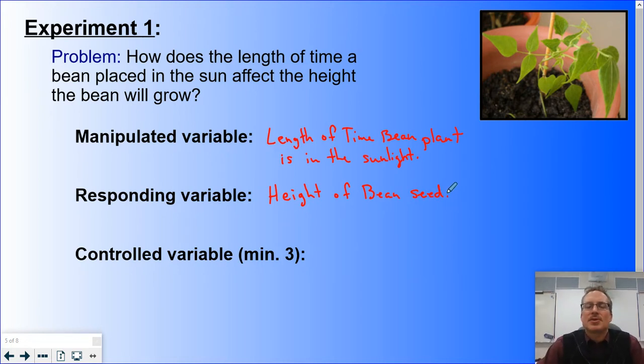How high the bean seed grows. We don't have to use height. We could have done how many leaves the bean seed plant has on it, how wide are the bean seed leaves, how many beans are produced. But we chose height to measure for our bean seed. What are some controlled variables? Let's think our way through this experiment.